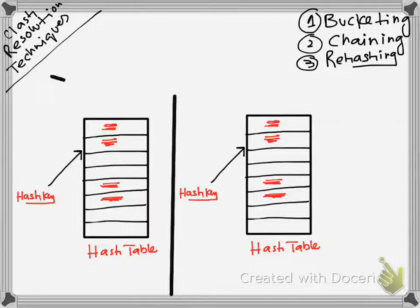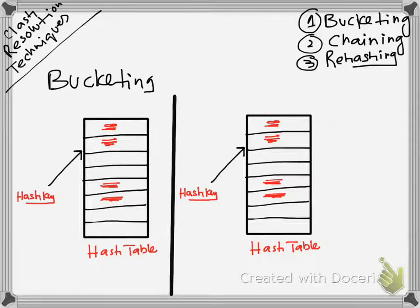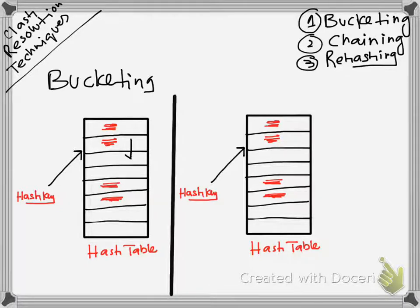In bucketing, when a hash key points to a location in the hash table that already has data, the computer finds that a record is already placed at that location — that is called a clash or collision. In that case, the computer starts looking forward from that location onwards, and wherever it finds an empty space, it adds the record over there.